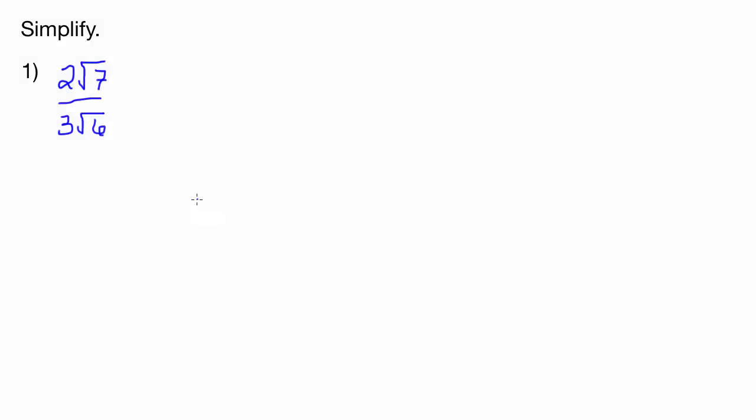Now let's try simplifying some radicals that are a little more difficult. We have 2√7 over 3√6.